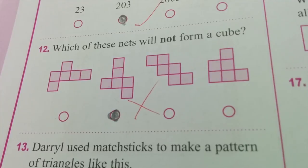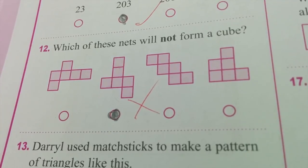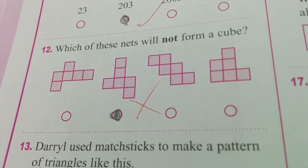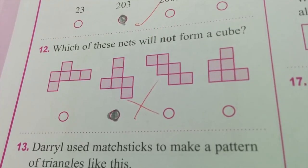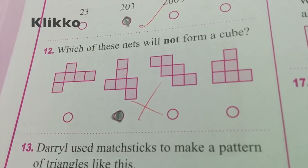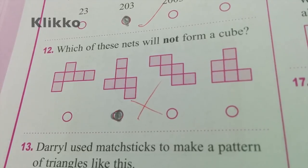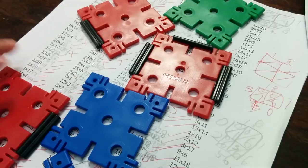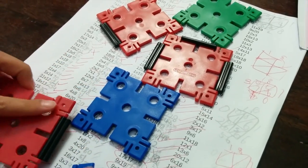My younger son happens to be a kinesthetic learner. He learns best when he gets his hands on things and actually starts doing stuff with his hands. So I'm going to show you how he's using a fantastic toy called Clicko to try to solve this problem. You have these plastic squares and plastic joints.